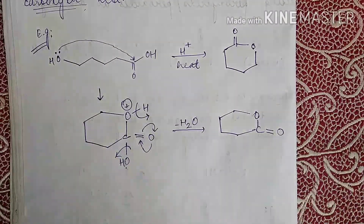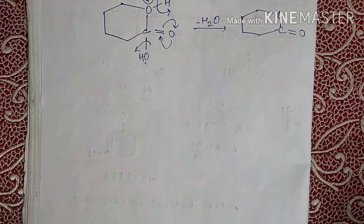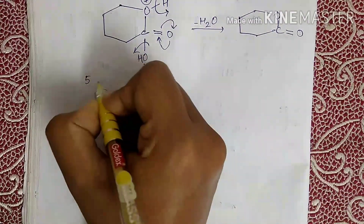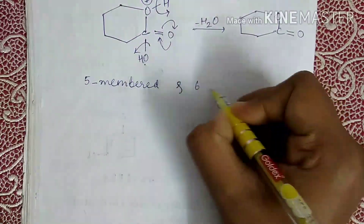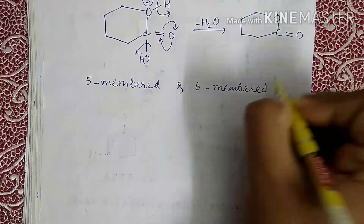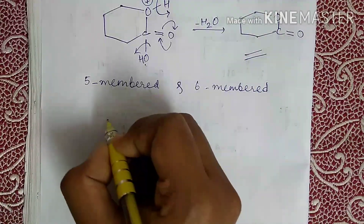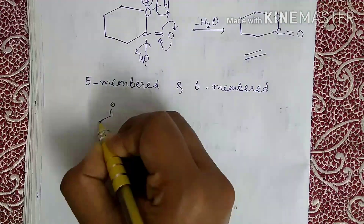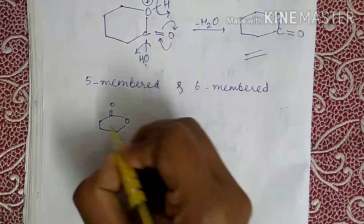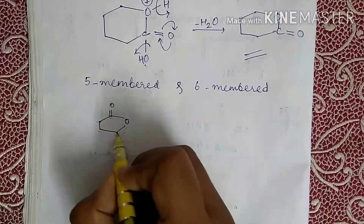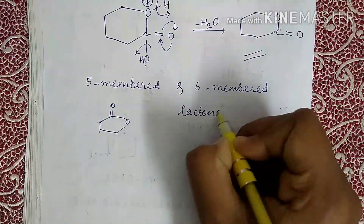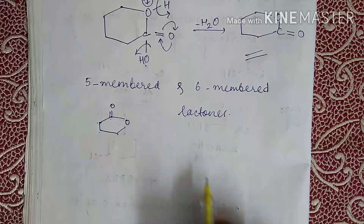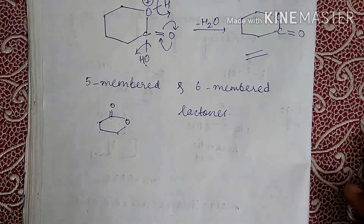Another thing to be noted is five-membered and six-membered lactones are stable lactones. Three and four-membered lactones are very unstable due to angle strain and are very reactive. In the first step of the reaction, the per acid dissociates into the corresponding anion and the cation — the cation obviously being H⁺.